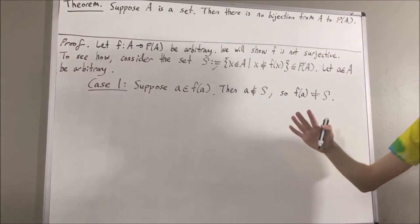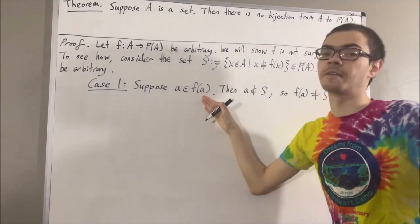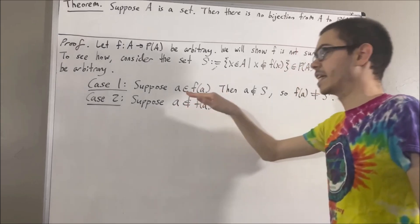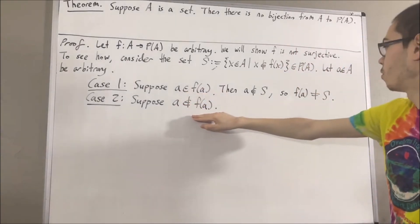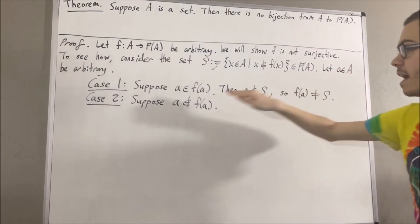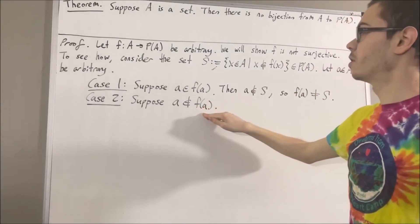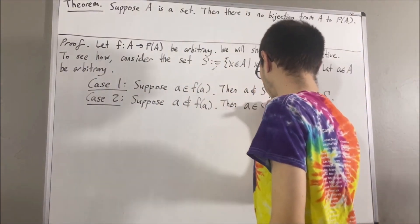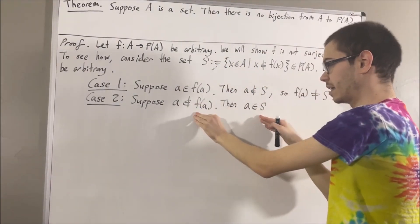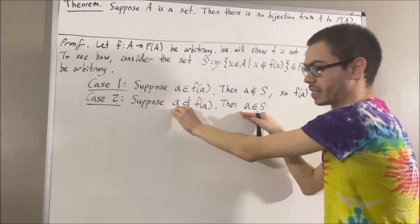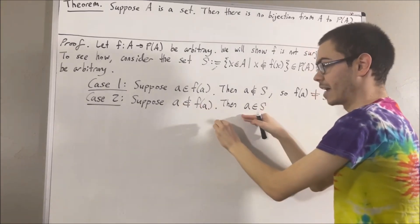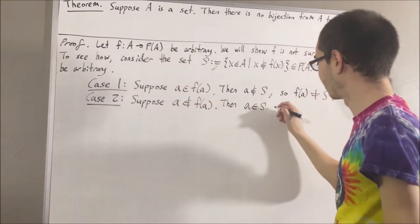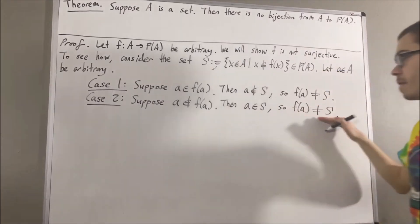Now let's move on to case 2, where a is not an element of F(a). In this case, we have a is an element of A and a is not an element of F(a). So a satisfies both requirements to be an element of S. But then we again see that F(a) and S don't share exactly the same elements: S contains a, while F(a) doesn't contain a. So there's no way that F(a) and S can be equal to each other, meaning F(a) is not equal to S.